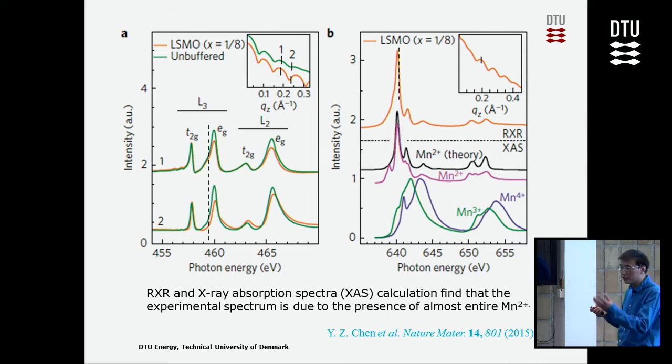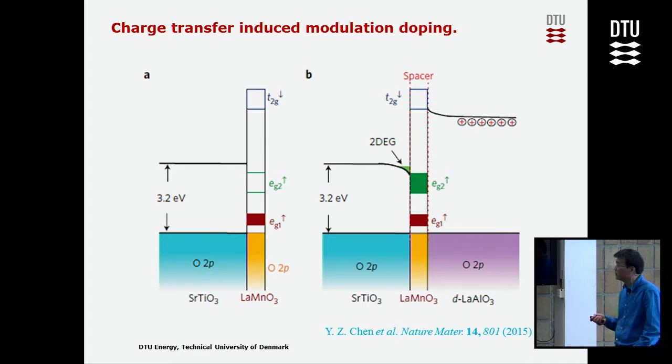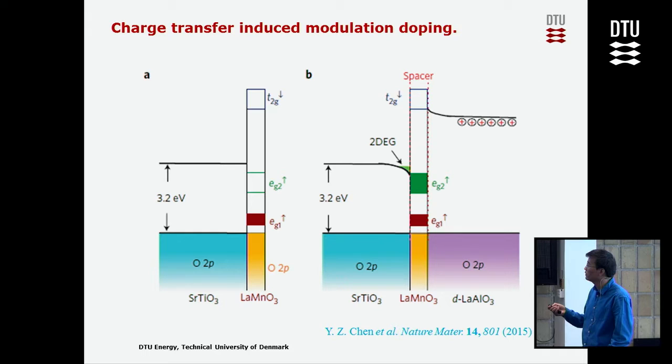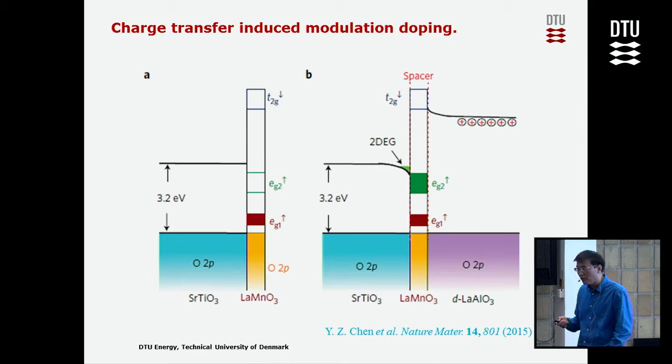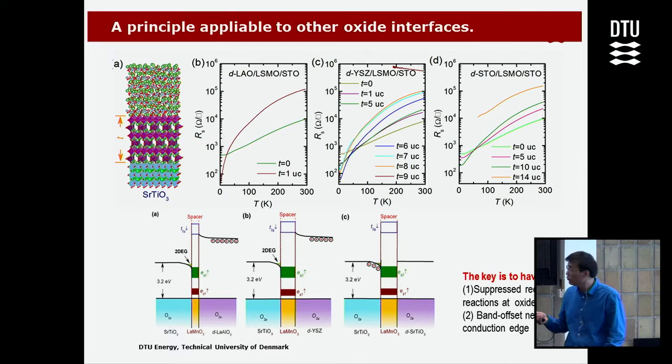We can find all the electrons go to the spacer layer — from the d_xz minus 3 band going to minus 2. Everything fits: before forming the electron gas you have an empty band, but after forming the 2D electron gas the first filled state is the EG band of the magnesium layer. This is the first time we realized modulation doping at an oxide interface, and we have now applied this technique to other interfaces where it also works well.